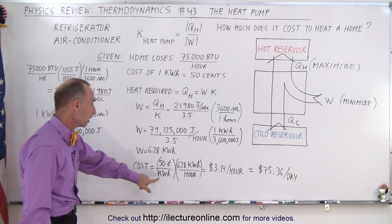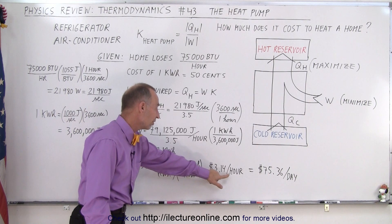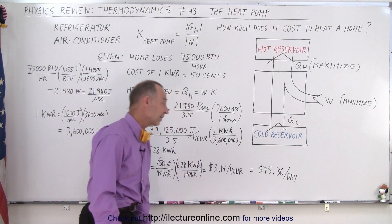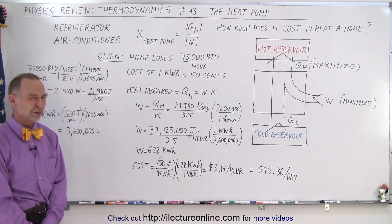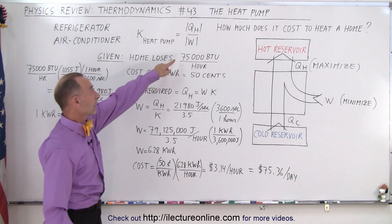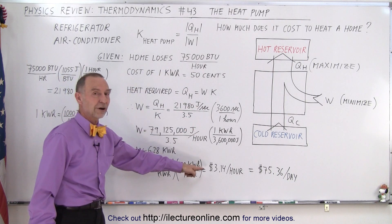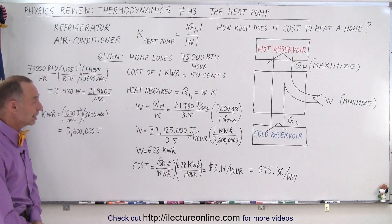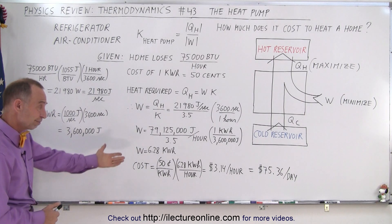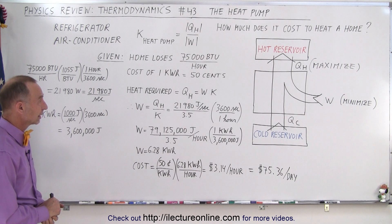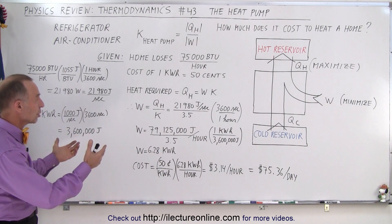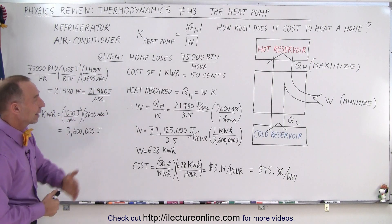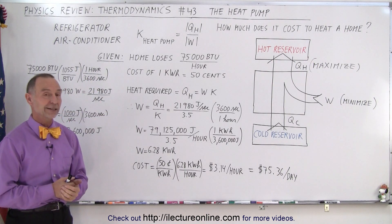At a cost of 50 cents per kilowatt hour, that is $3.14 per hour, and there are 24 hours in a day. So it would cost you $75 per day to keep your house warm, which is pretty expensive. Obviously, we're drawing a lot of heat for 24 hours, which may not be the case if you're not home. But at least now you know how heat pumps work and how the coefficient of performance has a huge impact on how much money you'll pay for that heat.